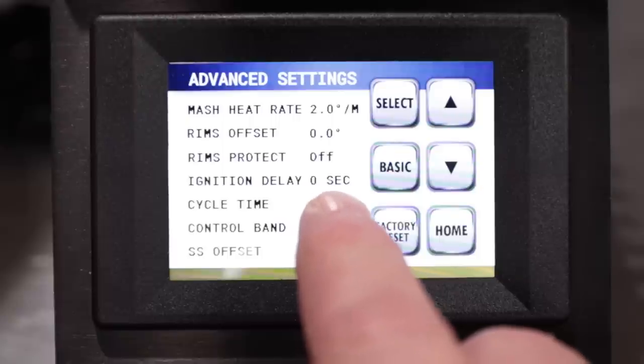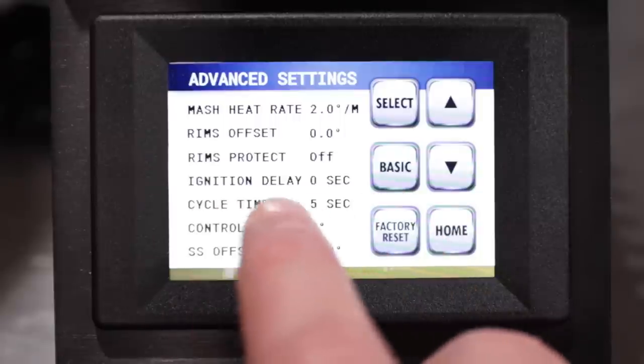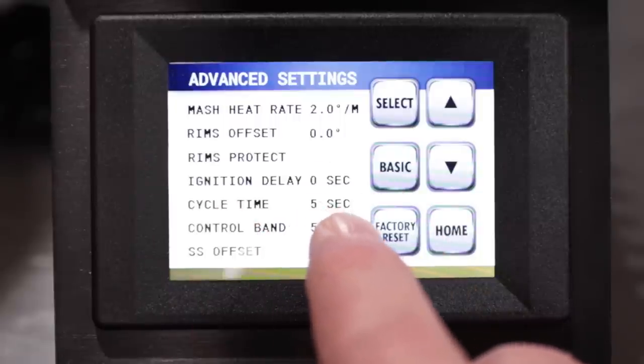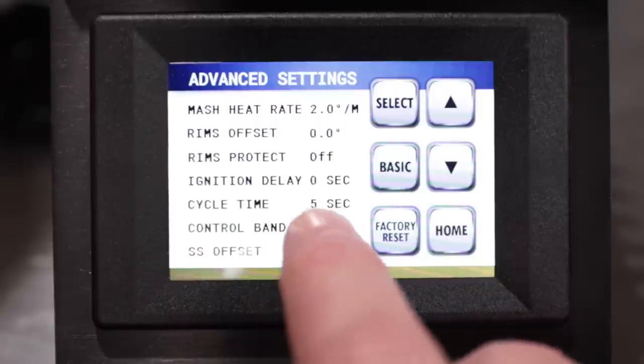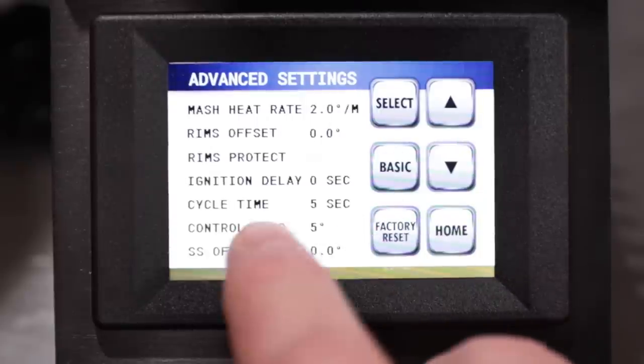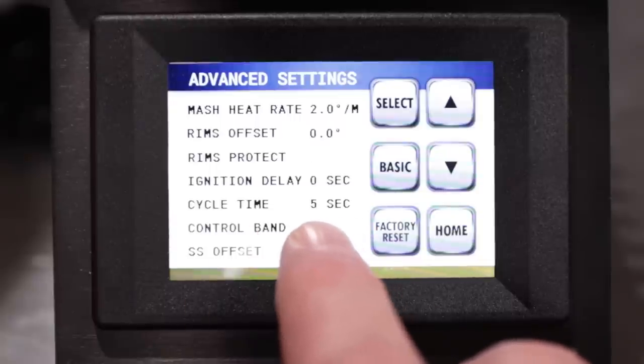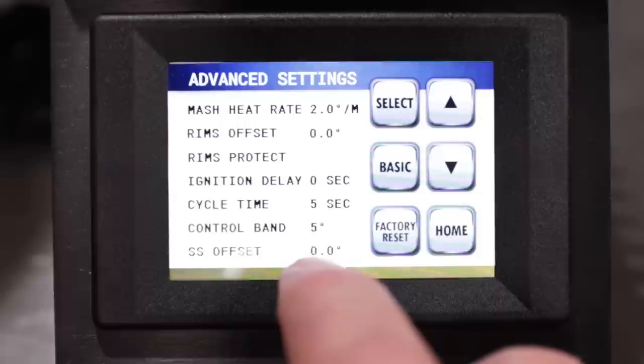The ignition delay is for gas driven systems, propane, natural gas, that type of thing. The cycle time five seconds, that is a setting. Once it reaches the set point temperature or within the degree of the set point temperature, it will begin to cycle the element every five seconds to attempt to hold that temperature.